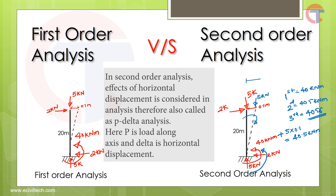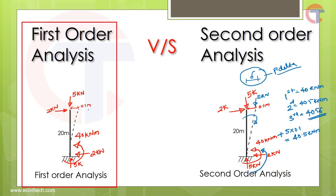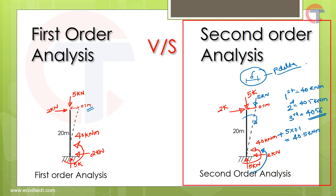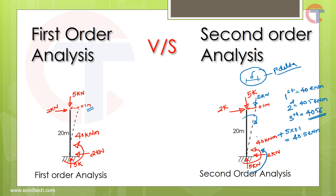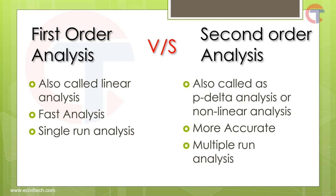This is also called P-delta analysis because we are considering the change in position — the displacement, delta. In first order analysis we calculate the deflection but do not consider any change in moment due to that deflection. In second order analysis we do account for it, which is why it is also called P-delta analysis and non-linear analysis. This was the difference between first order and second order analysis. Keep in mind that second order analysis gives more practical and accurate results.